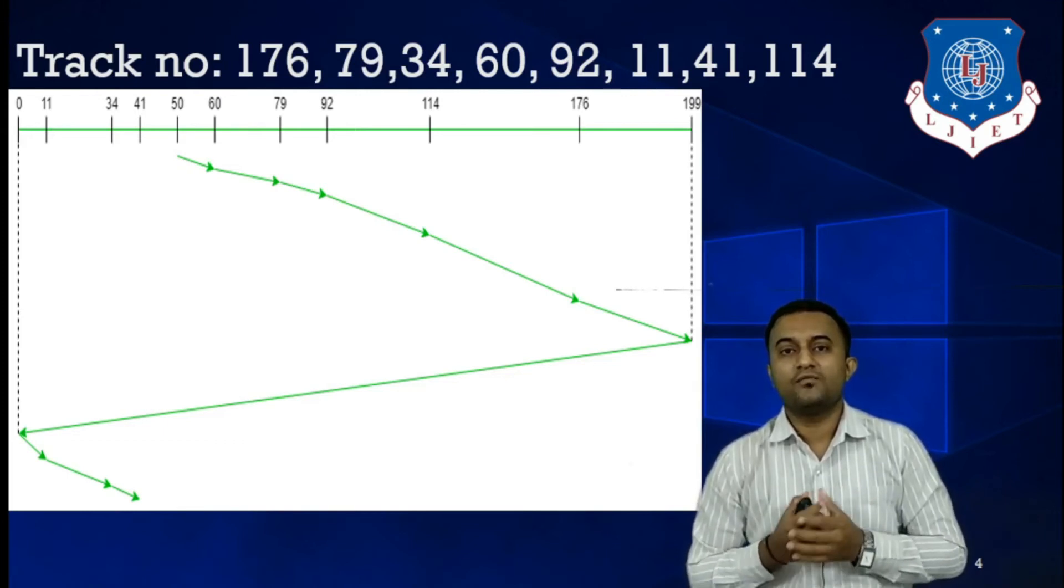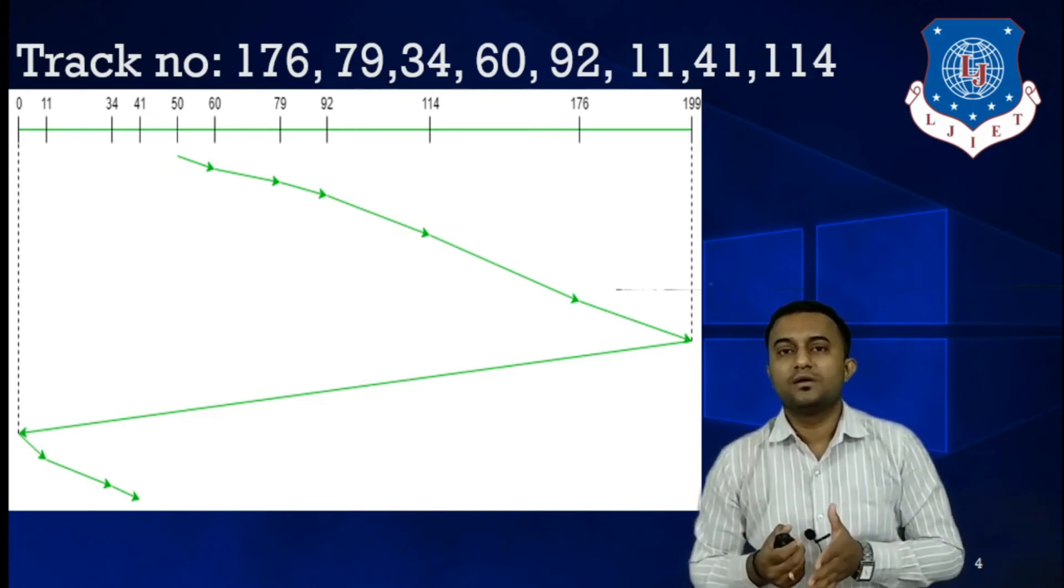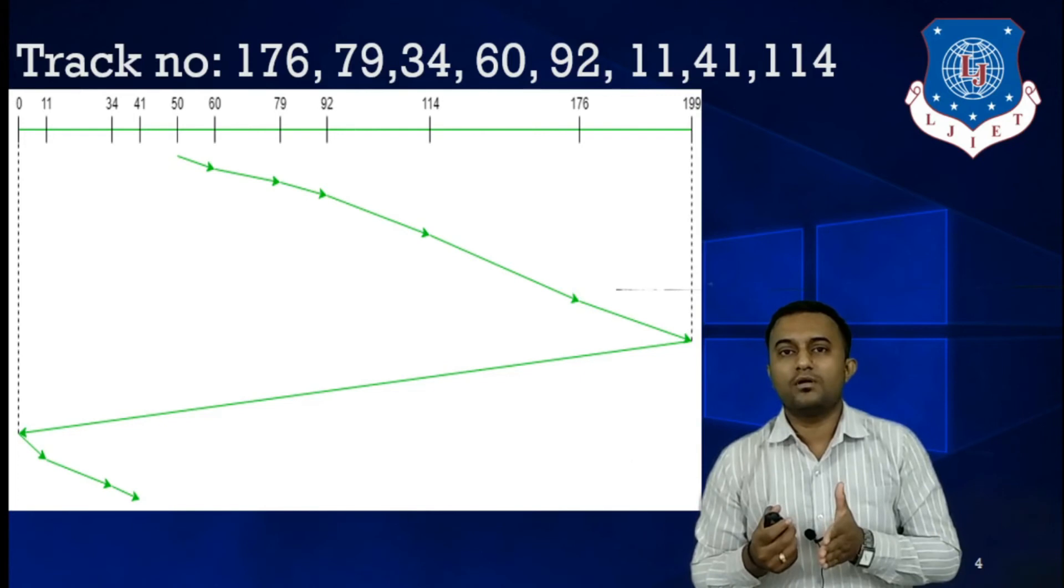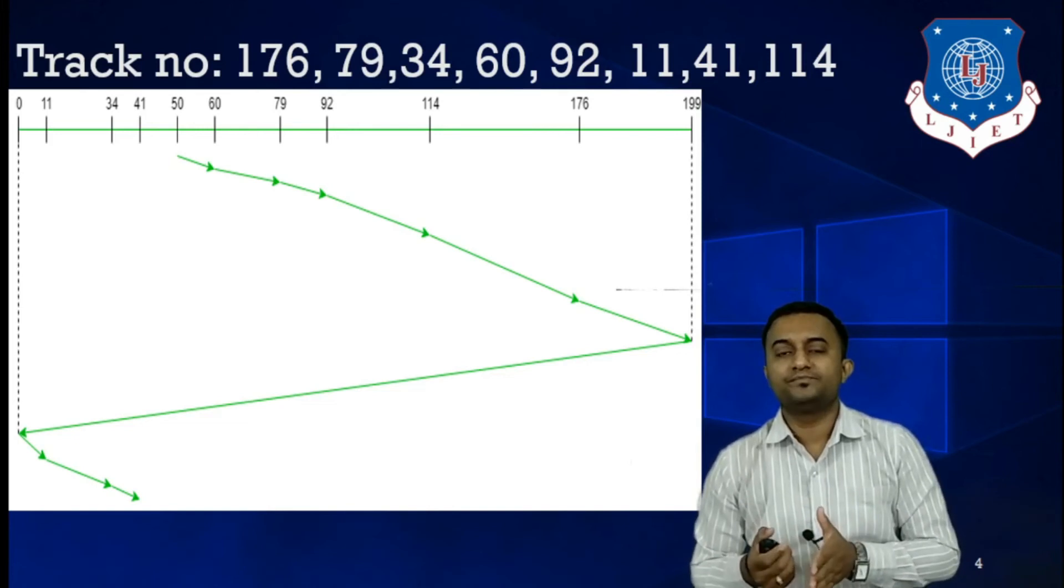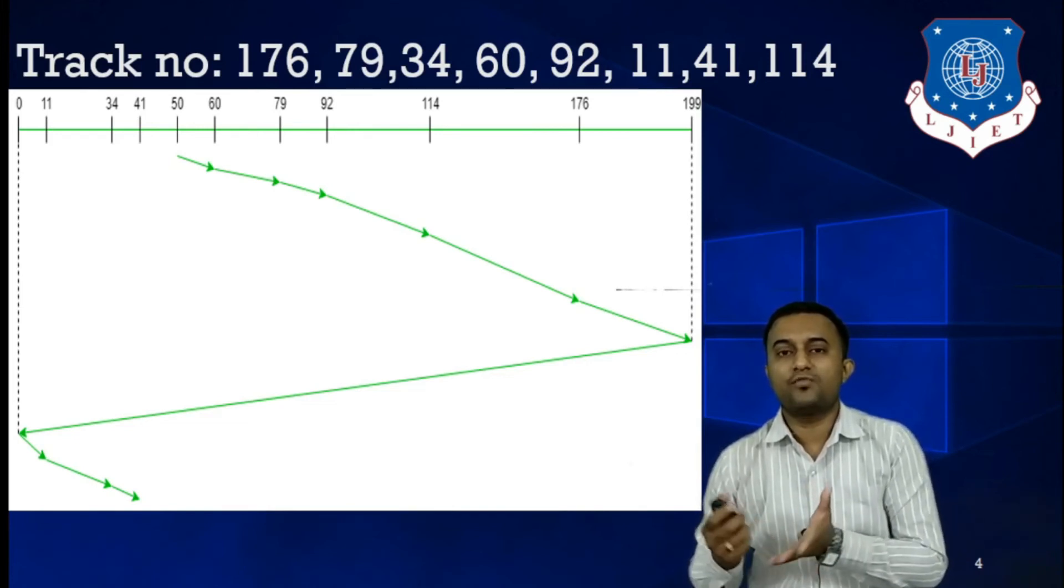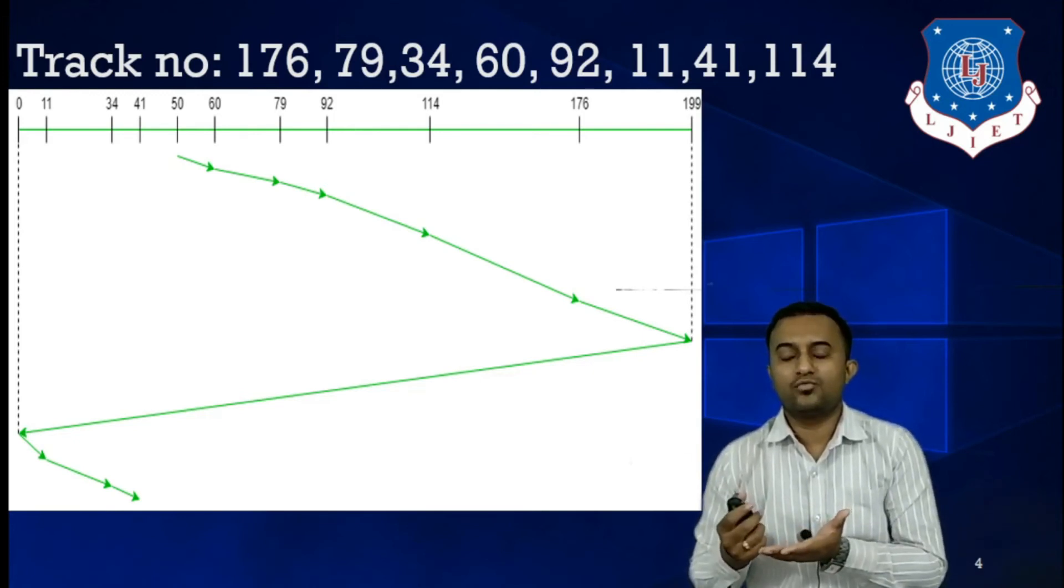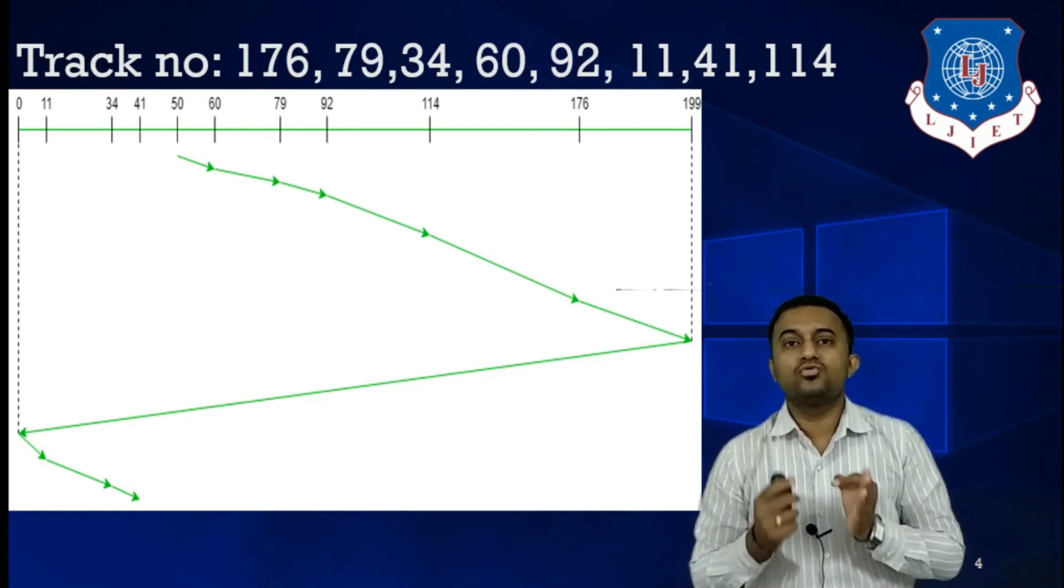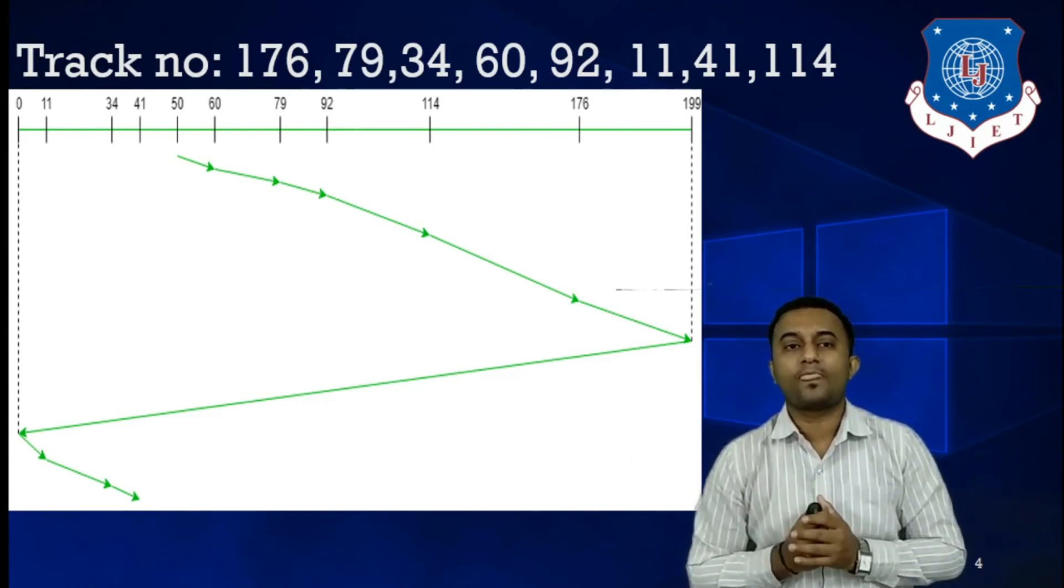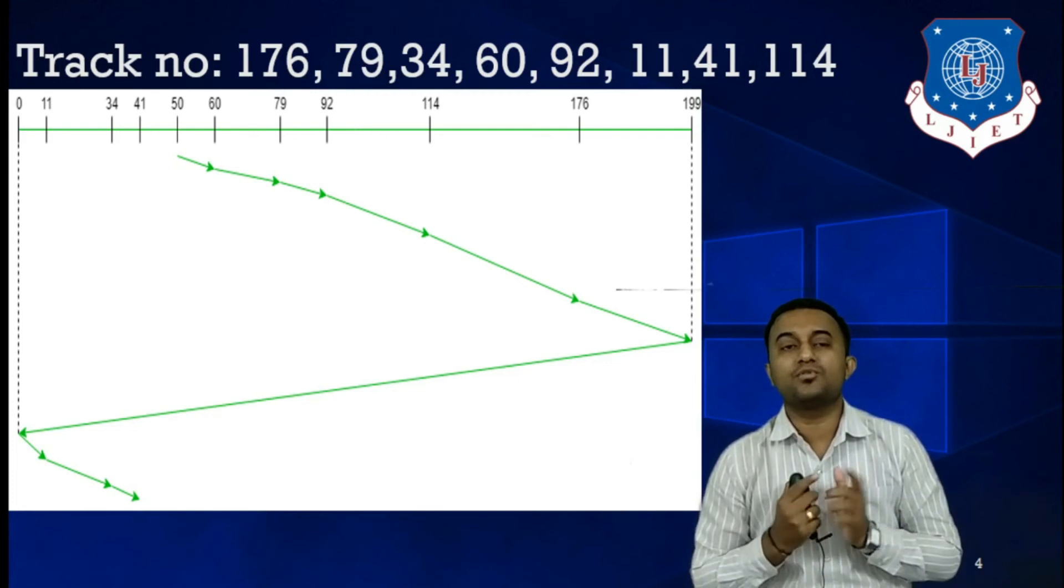To change the direction for the very first time, in that case, now we are moving forward from 199 towards lesser value. But while you change the direction, now we are moving towards opposite direction, and while moving towards opposite direction, you are not allowed to satisfy any request once you reach to the initial position or the initial track number of the disk.